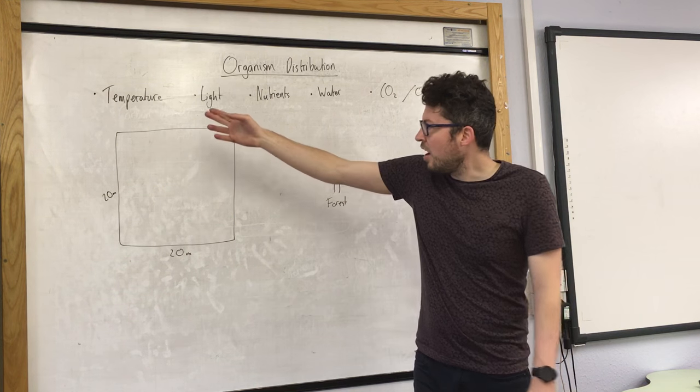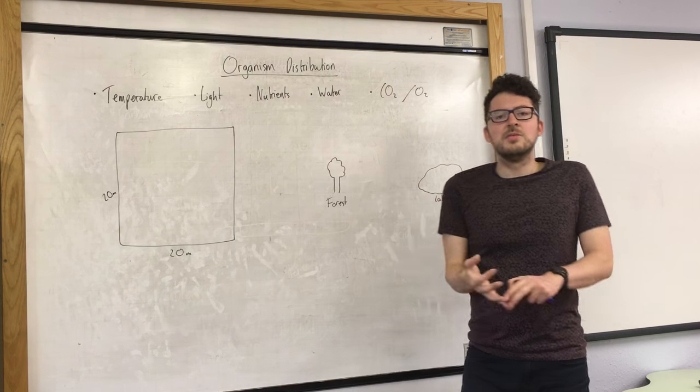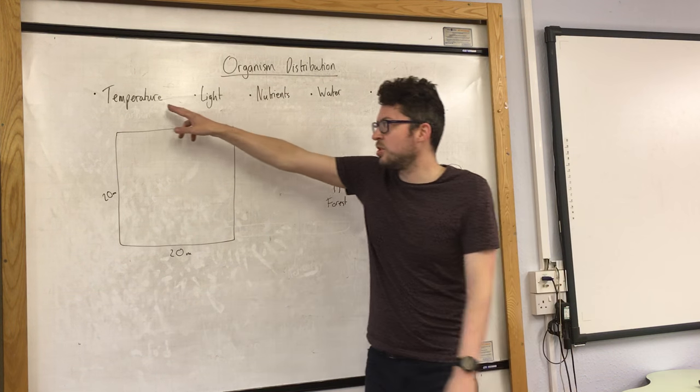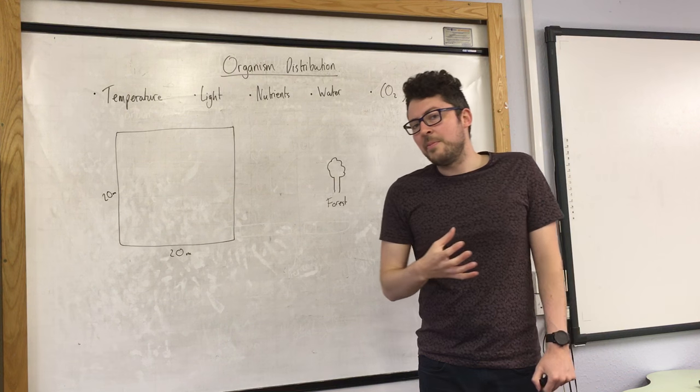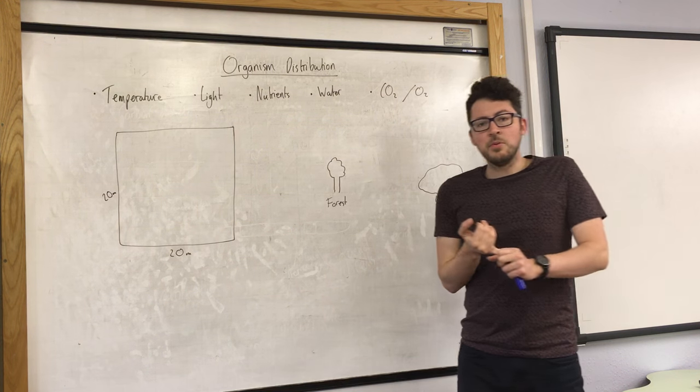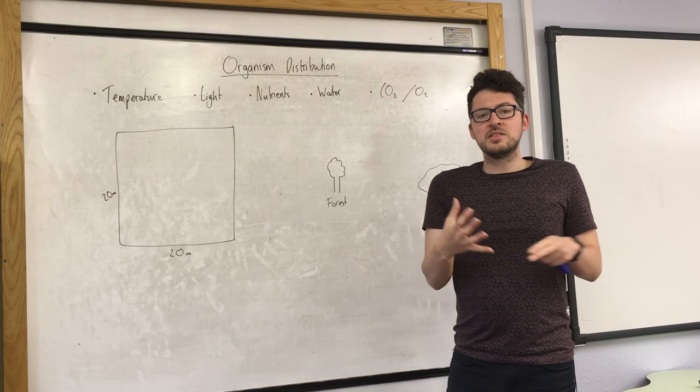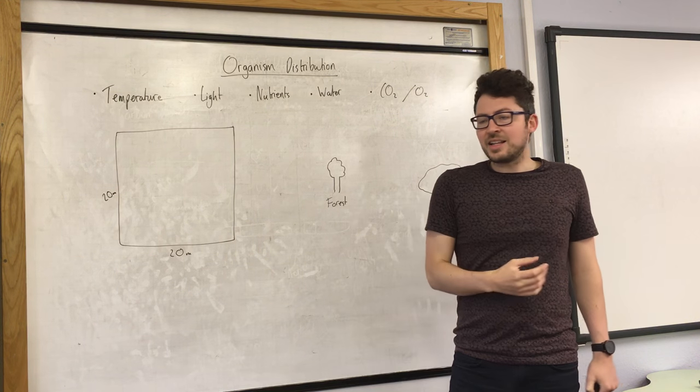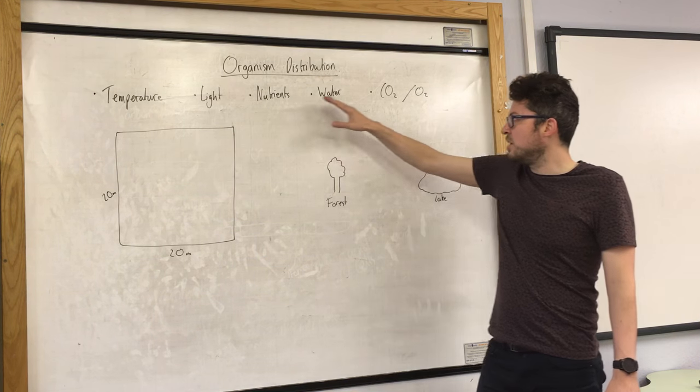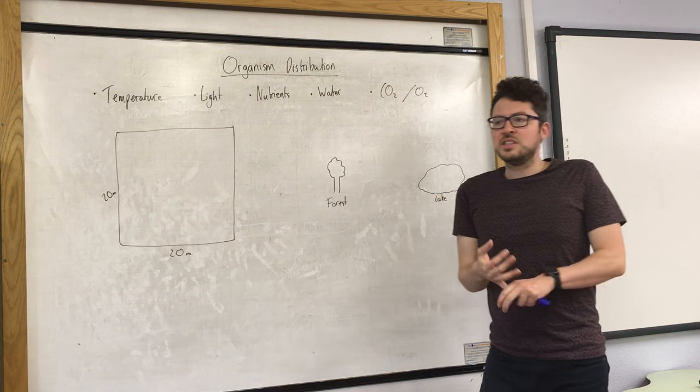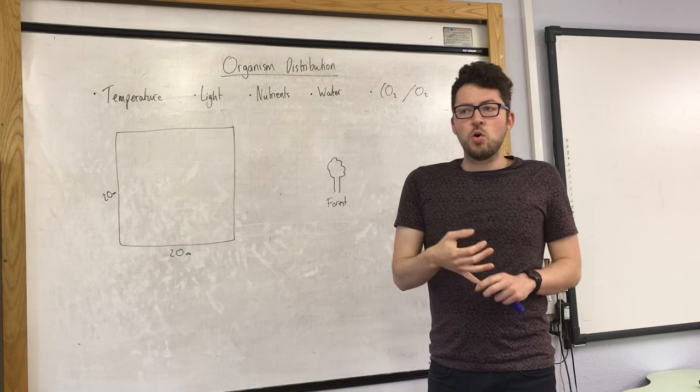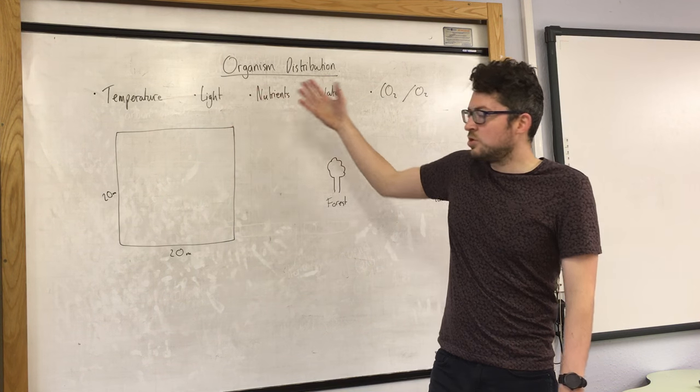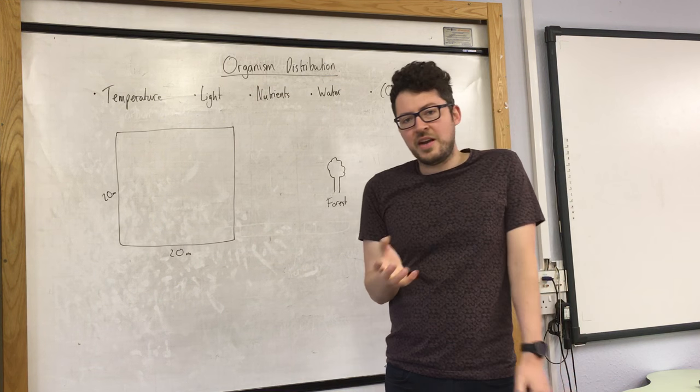Generally, the higher the amount of each of these, the more living things you will find. Obviously up to a point, because if the temperature increases too high, then fewer living things can live there. So you can see this example in the fact that rainforests are the richest places on earth in terms of the number of living things. And they have very high values for each of these. Whereas if you go up to the top of a mountain or to the Arctic, you're going to find far fewer because these resources are less available.